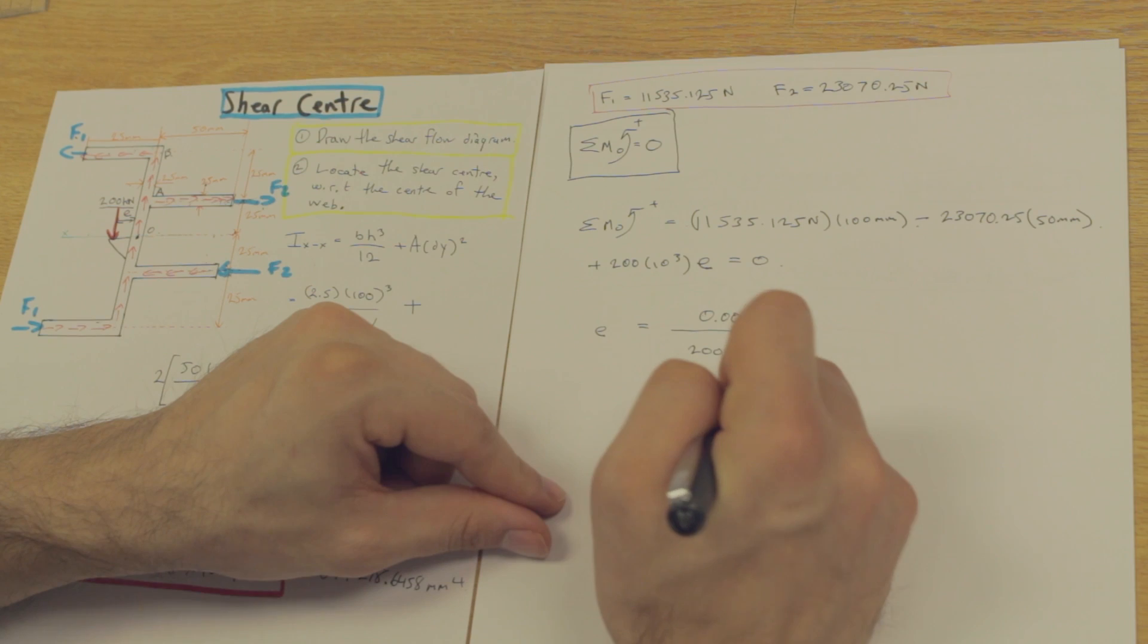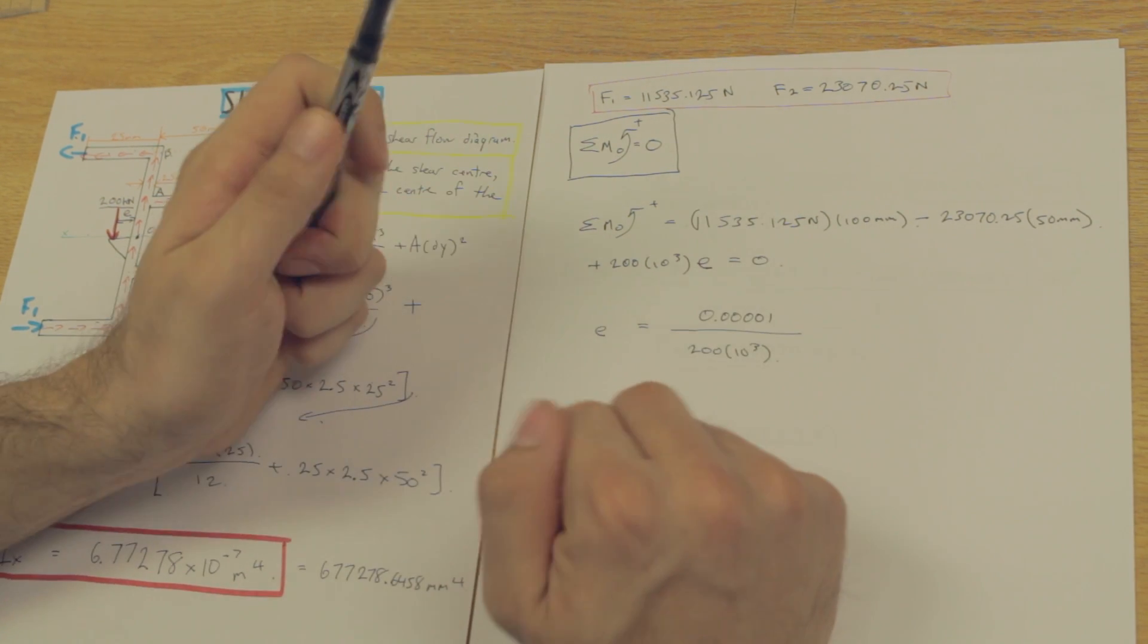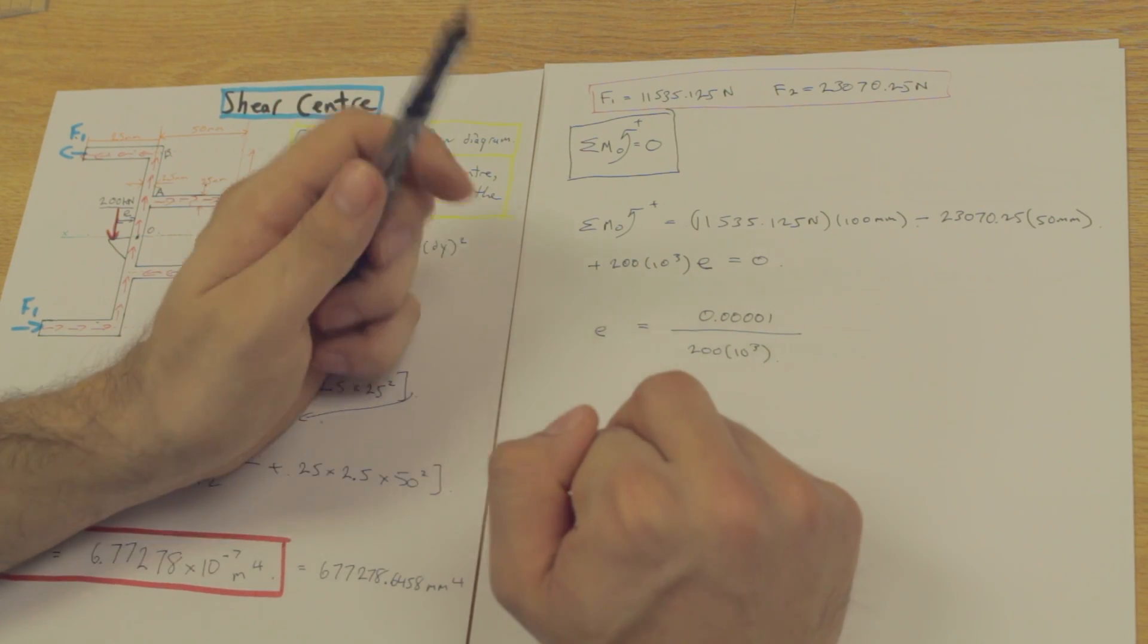Possibly something like that, divided by 200 times 10 to the 3. And we are going to get a very small number.